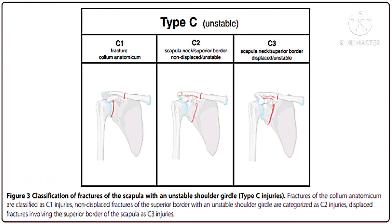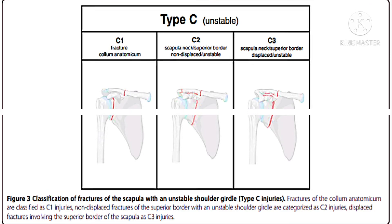Type C classification covers fractures of the scapula with an unstable shoulder girdle. Fractures of the collum anatomicum are classified as C1 injury. Non-displaced fractures of the superior border with unstable shoulder girdle are characterized as C2 injury. Displaced fractures involving the superior border of the scapula are C3 injury.